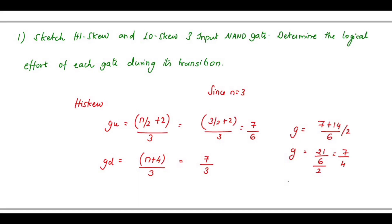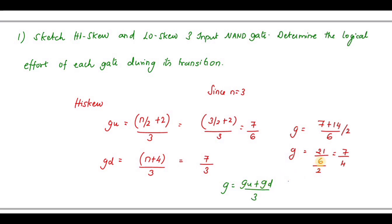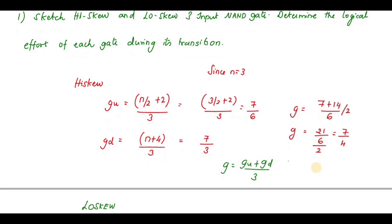Let us discuss how to sketch the high skew and low skew three-input NAND gate and determine the logical effort of each gate during its transition. The high skew GU formula is equal to (N/2 + 2) / 3. Since N equals 3, we get (3/2 + 2) / 3 = 7/6. The GD value is N(N + 4) / 3 = 7/3. The overall G equals (GU + GD) / 2 = (21/6) / 2 = 7/4.